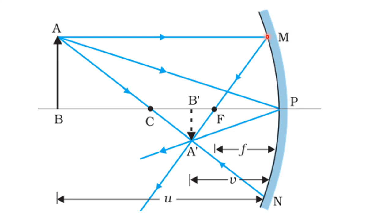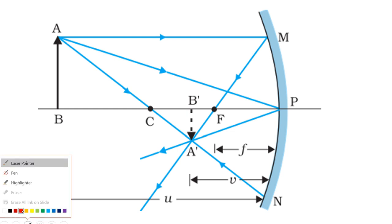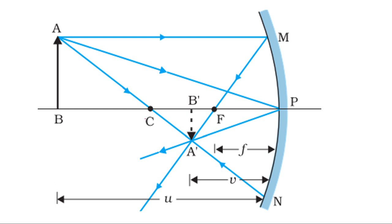In the mirror, the reflected light rays from the lower half are no longer available. Only the upper half of the mirror contributes to the reflection and image formation.